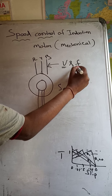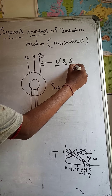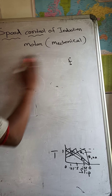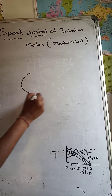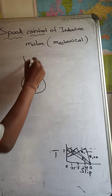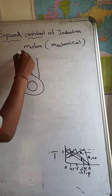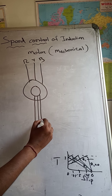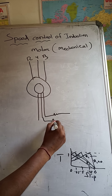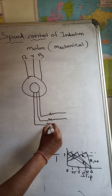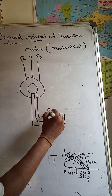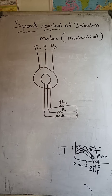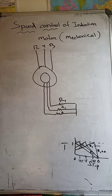You cannot change only the frequency; you must change both voltage and frequency together. In the case of a slip ring induction motor, you can see the rotor is not short-circuited. The stator supply is R, Y, and B. It has a resistance in the rotor circuit. By adding resistance R1 in the rotor circuit, we can change the speed of a slip ring induction motor.